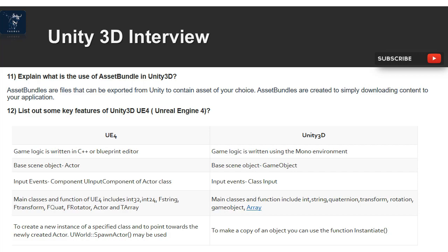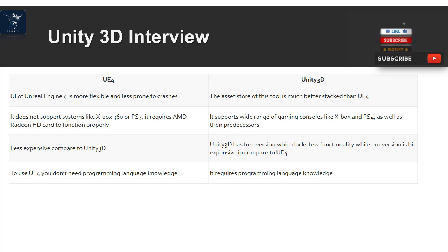Main Unity classes and functions include int, string, Quaternion, Transform, Rotation, GameObject, and Array. To create a new instance in UE4, use UWorld::SpawnActor; in Unity, use the Instantiate function. The UI of Unreal Engine 4 is more flexible and less prone to crashes, while Unity's asset store is better stocked than UE4's. UE4 does not support systems like Xbox 360 or PS3 and requires an AMD Radeon HD card; Unity supports a wide range of consoles including Xbox and PS4 and predecessors. Unity 3D has a free version lacking some features, while the Pro version is more expensive compared to UE4. UE4 does not require programming language knowledge, whereas Unity requires it.